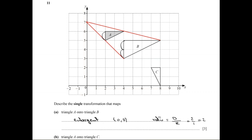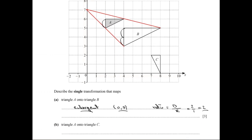So the answer is two. If you write the word enlargement, you can get one mark. Zero, seven for the center of enlargement, and the ratio of enlargement, you will get the third mark. Question B: triangle A onto triangle C.